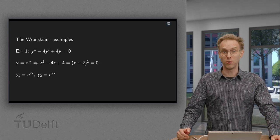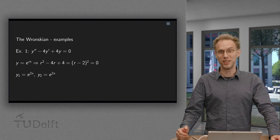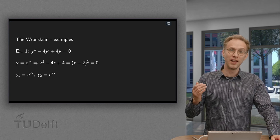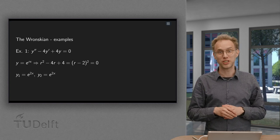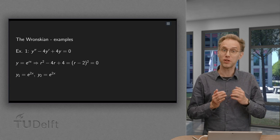We have seen how we can use the Wronskian to see whether we have independent solutions. Let us now look at some tricky examples to see what happens if something goes wrong.